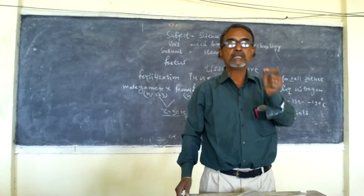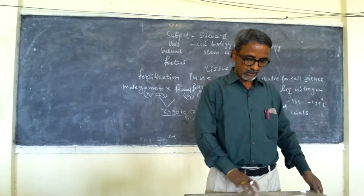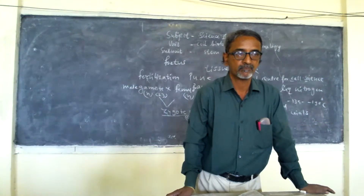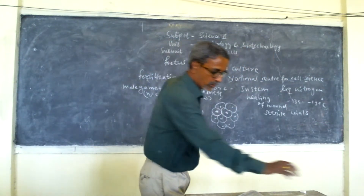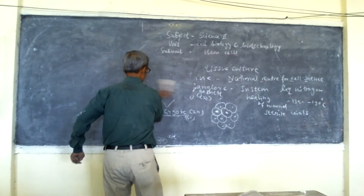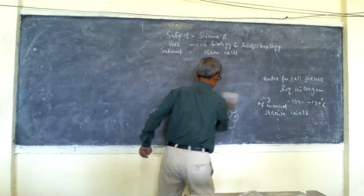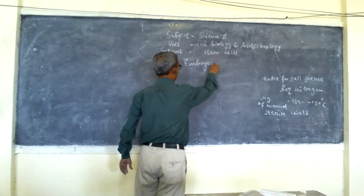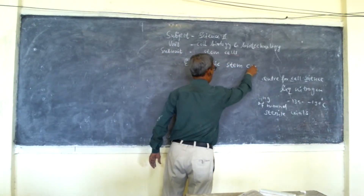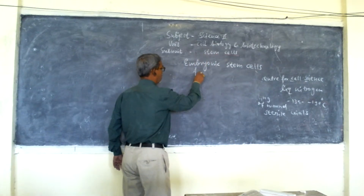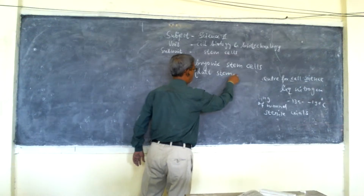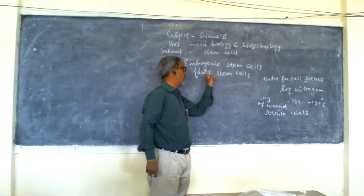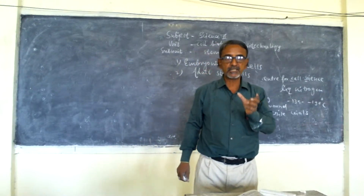Now we shall see the types of stem cells. Depending upon the source, there are two types of stem cells. The first type is embryonic stem cells and the second type is adult stem cells.